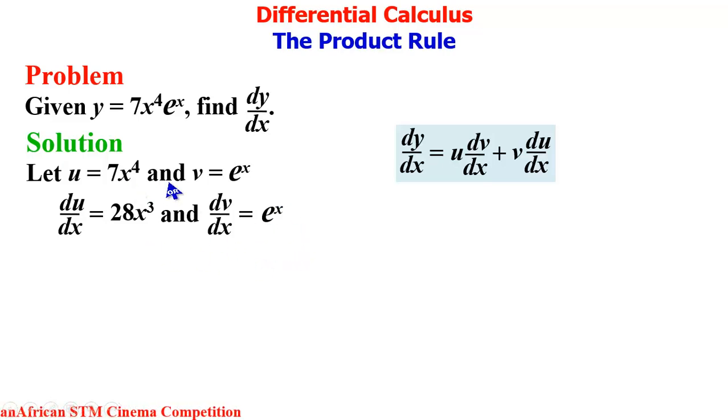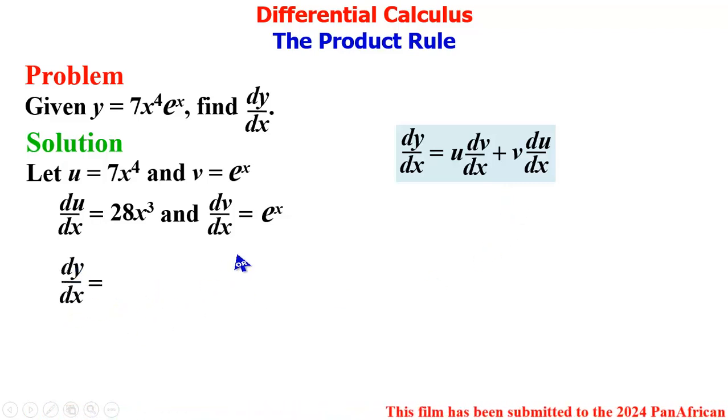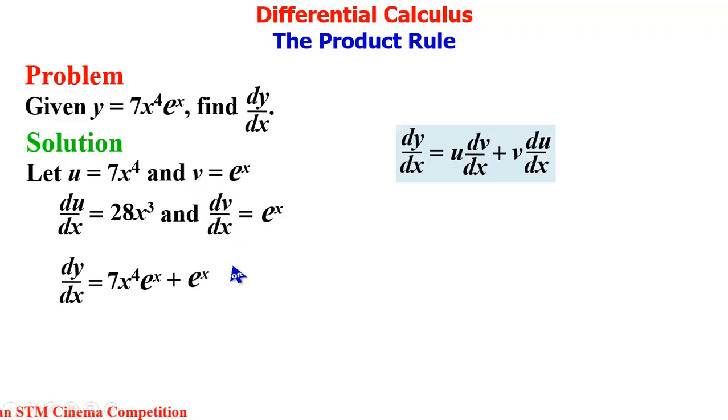We then substitute this information in the product rule so that dy/dx will be u, our u is 7x raised to the power 4, dv/dx, our dv/dx is e power x, plus v, our v is e raised to the power x, and du/dx is 28x raised to the power 3, so times 28x raised to the power 3.